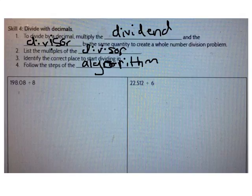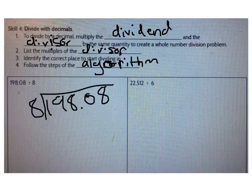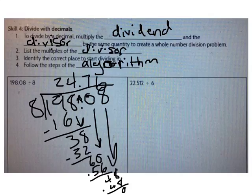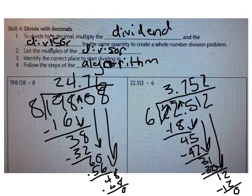Let's start by dividing decimals by whole numbers. What's 198 and 8 hundredths divided by 8? Go ahead and solve that problem now. The correct answer is 24 and 76 hundredths. Solve another one. What's 22 and 512 thousandths divided by 6? Go ahead and solve that problem now. The correct answer is 3 and 752 thousandths.